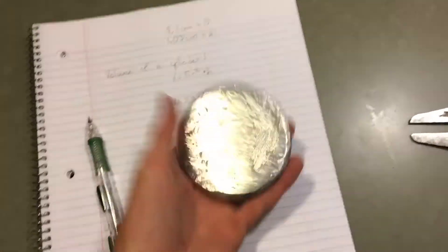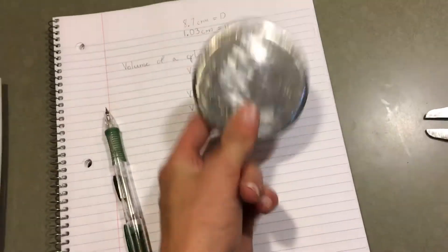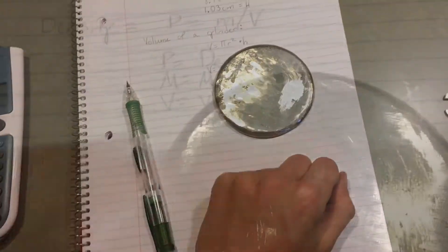So we have the total volume of this, but what if we want to find the density? To find the density of this guy, we'll have to use a scale.